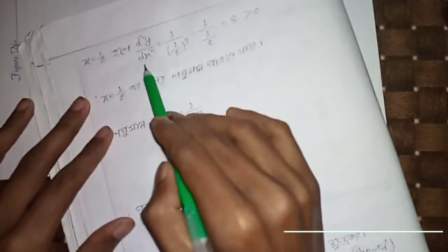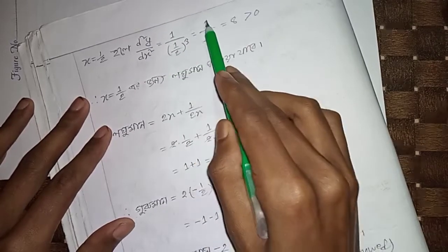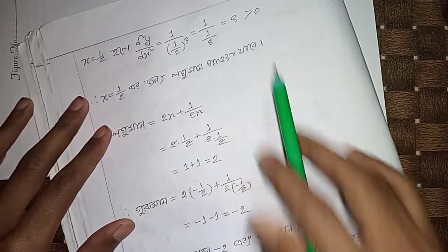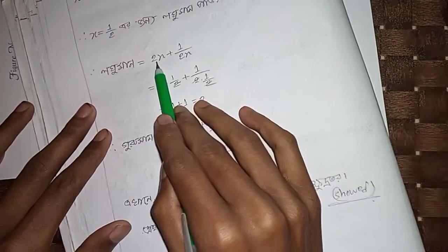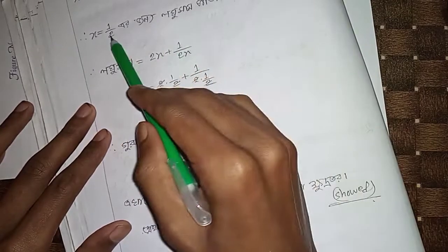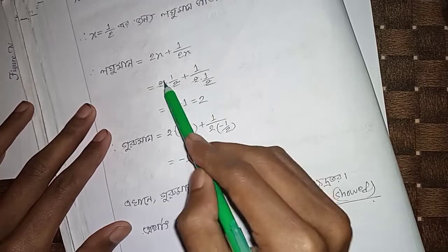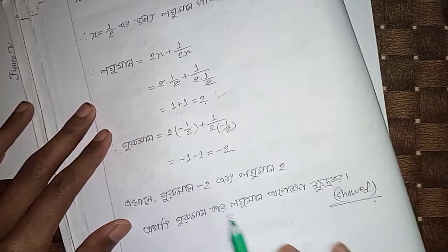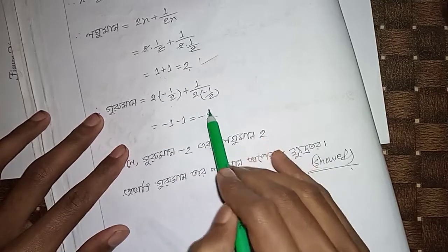At x equals half, we have 1/8 equals 8, which is positive. So x equals half gives a minimum. Evaluating y: 2 times (1/2) plus 1/(2·1/2) equals 1 plus 1 equals 2 plus 1, giving y equals 3.